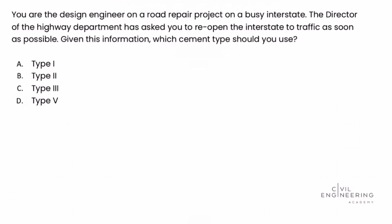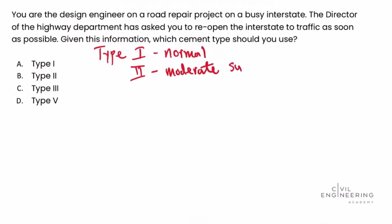We need to know that there are five different cement types, ranging from Type I to Type V, and they all use the Roman numeral system. Type I cement is normal cement. Type II cement has moderate sulfur resistance — you might find this in areas where there is a moderate to low sulfur content in the soil or surrounding area.